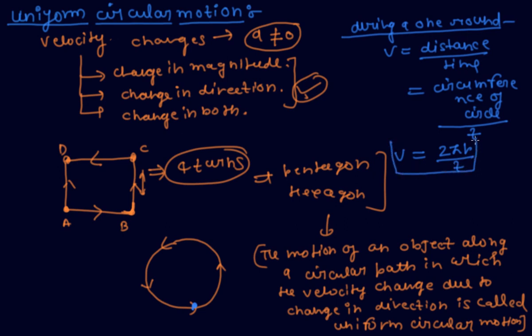If r is the radius of circular motion. So this is uniform circular motion, or the motion of an object along a circular path in which velocity changes due to change in direction.